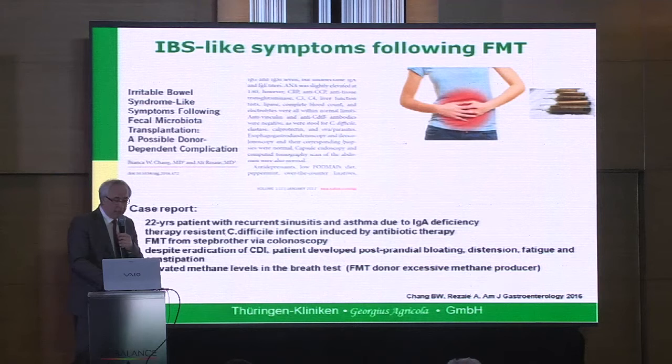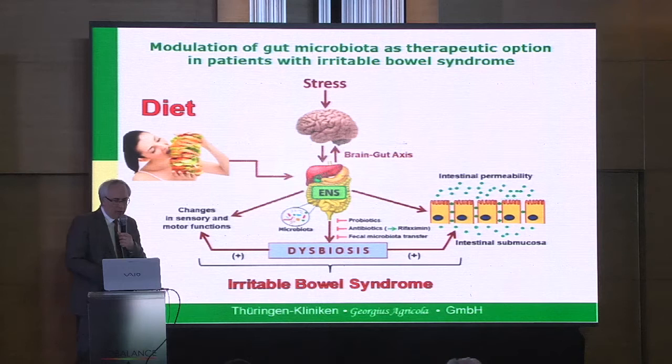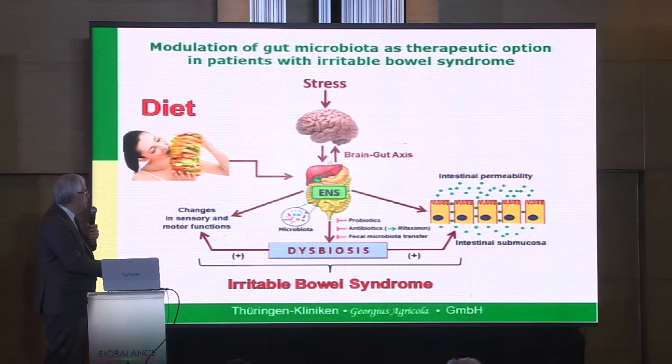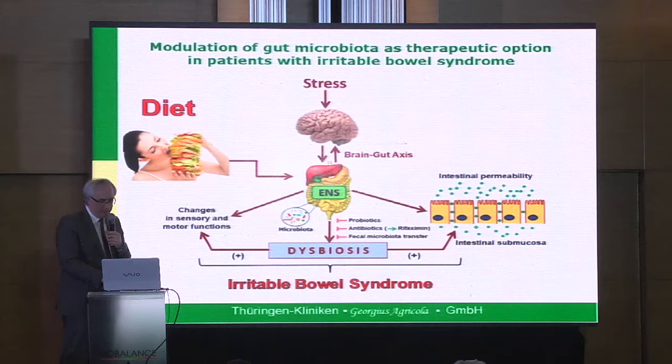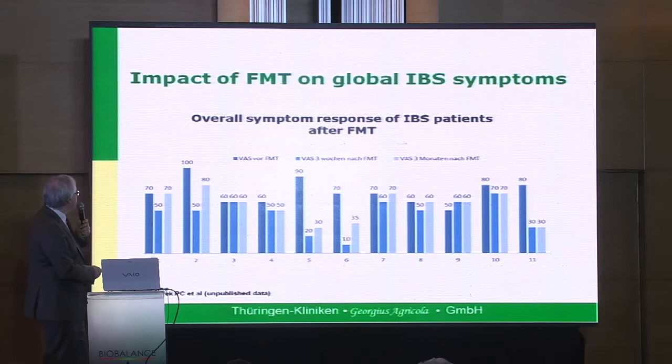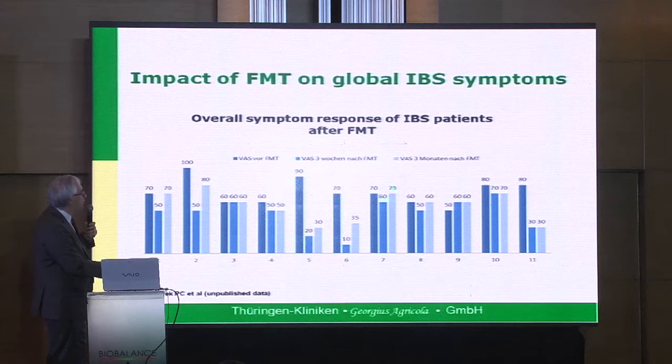The modulation of this gut microbiota-brain axis is the future of studies. Probiotics, prebiotics, symbiotics, and antibiotics like rifaximin play an important role, as does fecal microbiota transfer. We are doing studies now with colleagues in Erlangen, and we see a decrease in the global IBS symptom level after FMT — not in all patients, and it's not a persistent situation. Probably the patients need repeated FMTs, which is a problem.